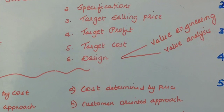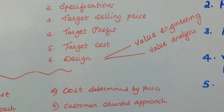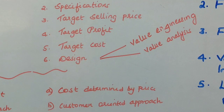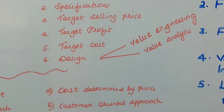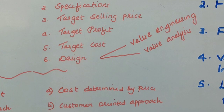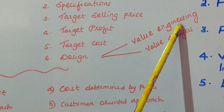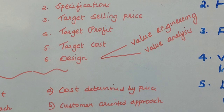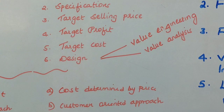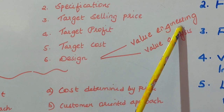Value engineering means when the manufacturer makes changes in the process, or changes in the techniques, materials, or equipment, so that the functionality of the product is not disturbed, it is termed as value engineering. In short, changing the process, material, or resources so that the functions of the product are not disturbed is value engineering.